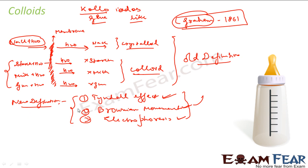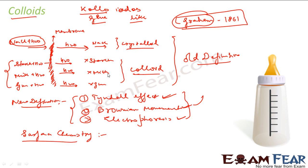Now the question is: why are we studying colloids in the chapter of surface chemistry? What does surface chemistry have to do with these things? The main reason is that with colloids, it's all about the size — the size of the particles. If they have a size in the fixed range of 1 to 1000 nanometers, they are colloids.